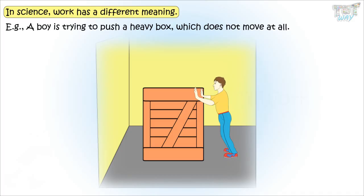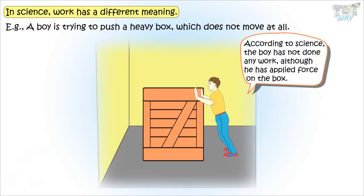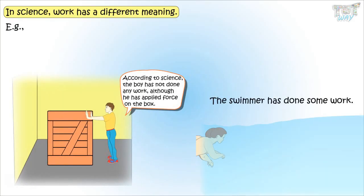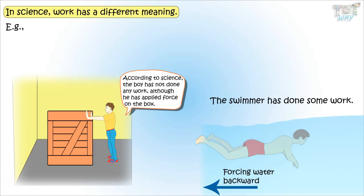His muscles are working hard, but he couldn't push hard enough to move the box. In science, we say that the boy has not done any work, although he has applied force on the box. But the swimmer has done some work, because he was successful in forcing the water backward and moving himself forward.